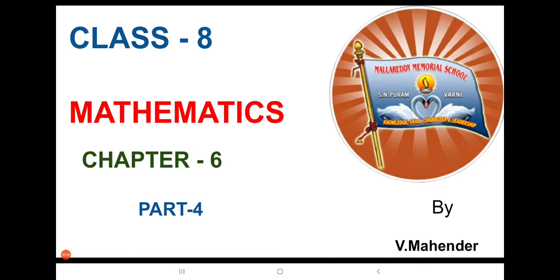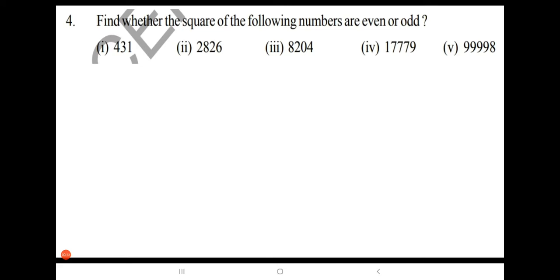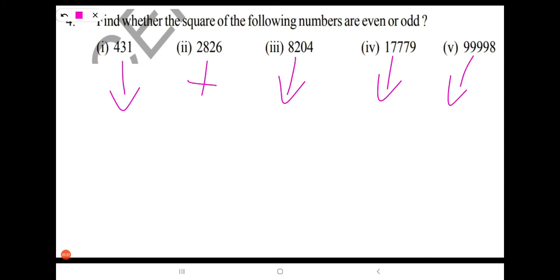This is Mahindar. In this video we are going to solve Exercise 6.1, problem number 4. Look at the question: find whether the square of the following numbers are even or odd. There are 5 bits given here. So we have to find whether the square of these numbers is even or odd.